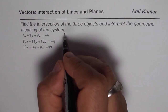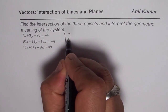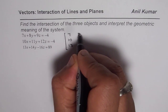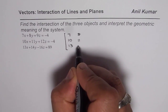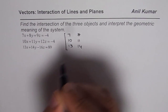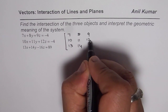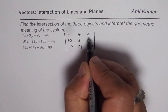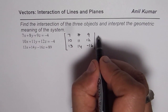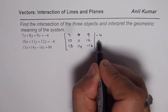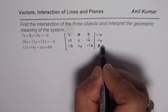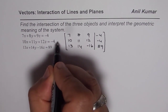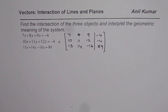We write the coefficients of the three planes into the augmented matrix: the first row is 7, 10, 13; the second row is 8, 11, 14; and the third row is 9, 12, minus 16. The right-hand side values are minus 4, 8, and 9 respectively. That is the same system of equations represented as an augmented matrix.